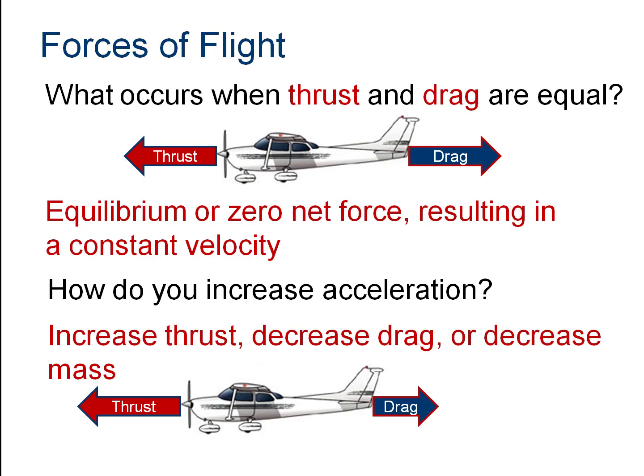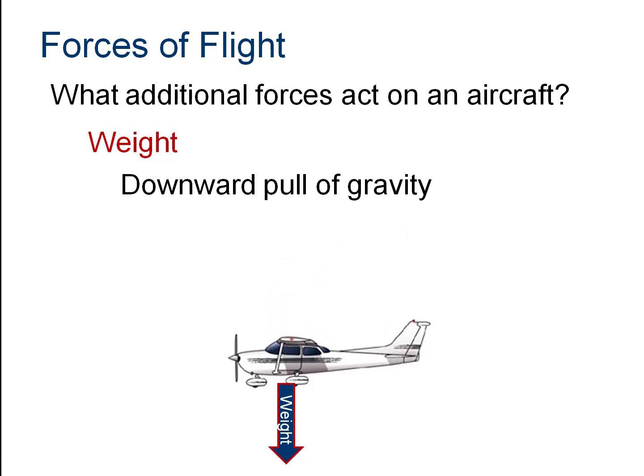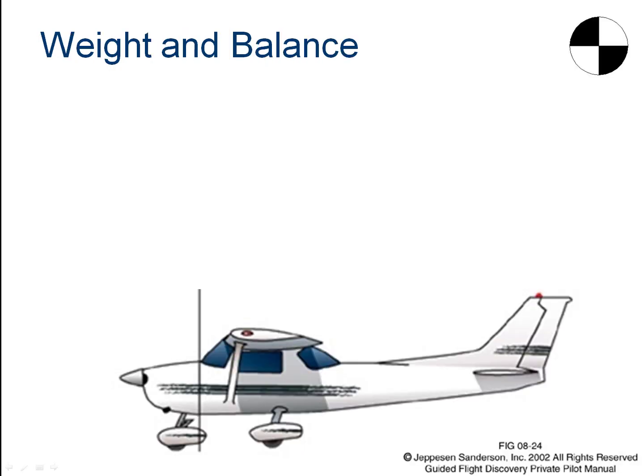Weight is always pulling straight down, regardless of the orientation of the airplane. It's pulling down at what we call the center of gravity of the aircraft — essentially the centroid of the airframe, where the plane would balance if supported on a stick. The center of gravity is represented by a specific symbol. In a weight and balance calculation, we have to balance both the amount of weight the airplane is asked to lift and the placement of that weight.